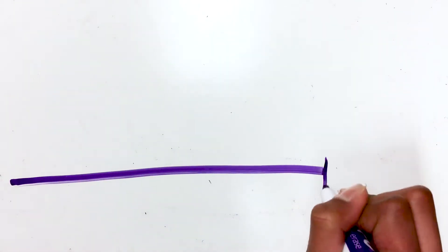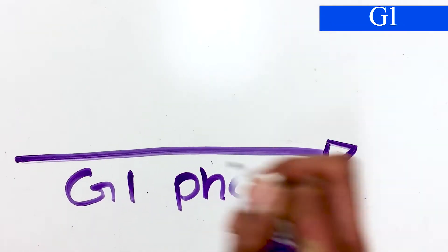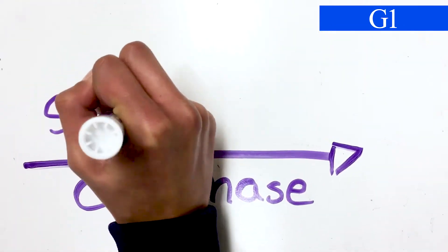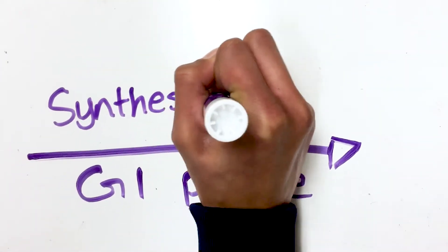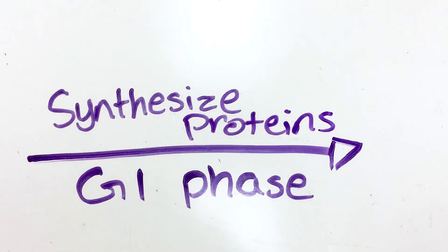In interphase, there are three stages: G1, S, and G2. During G1, cells grow and synthesize proteins needed for mitosis. At the G1 checkpoint, cells assess internal and external conditions to make sure it's right for dividing.